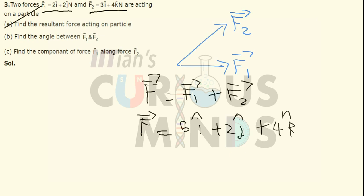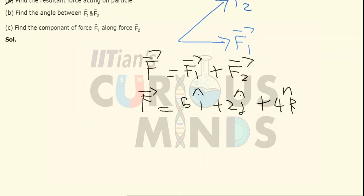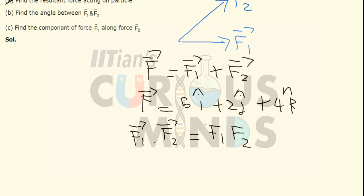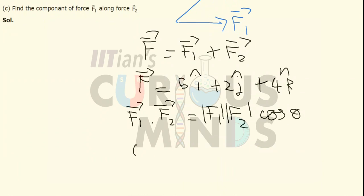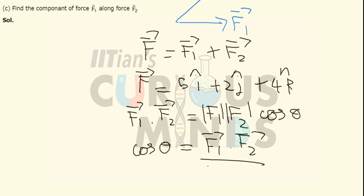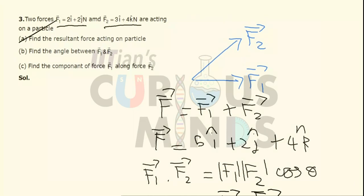Now we have to find the angle between them. To get the angle, recall that F1·F2 = |F1||F2|cosθ. So cosθ = (F1·F2) / (|F1||F2|). Let us find the dot product and the magnitudes.